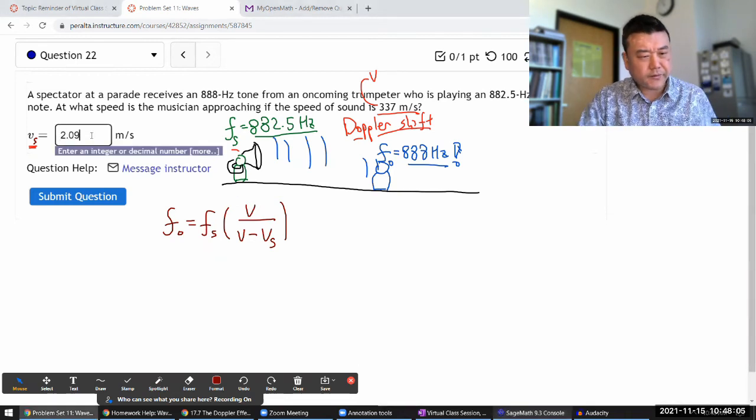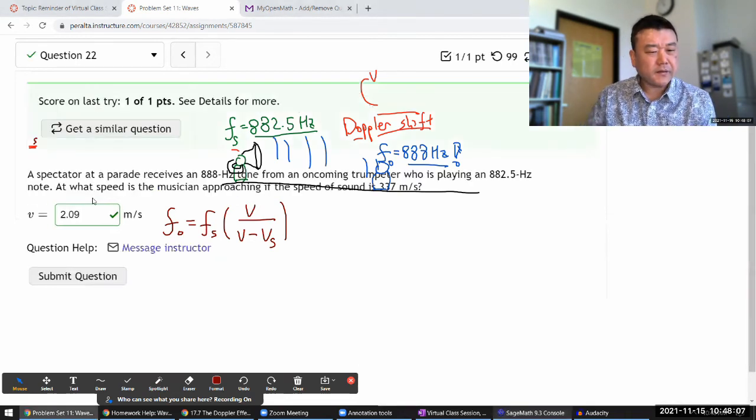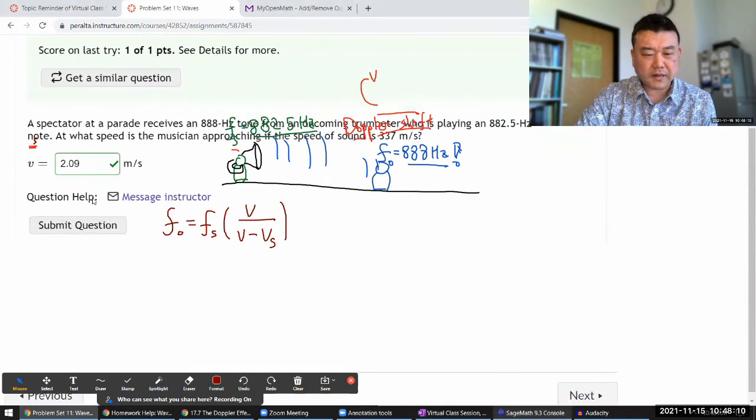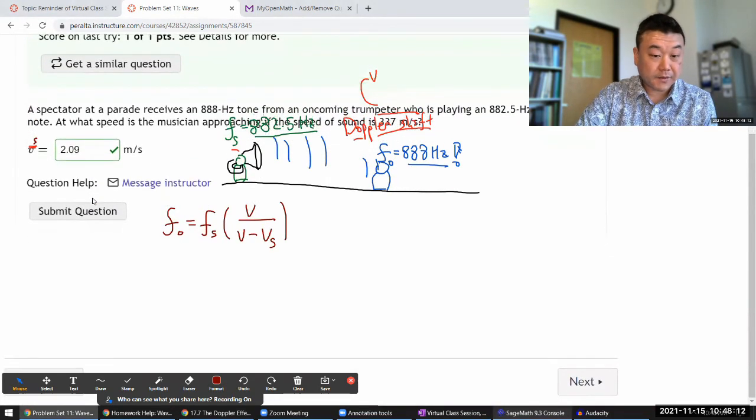Yes, that's a kind of a brisk pace, right? I think when I walk normally, it's like 1.5 meter per second. But anyways, so yeah, that's the answer.